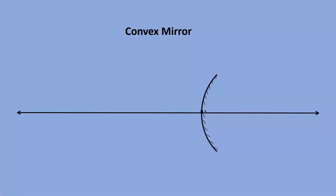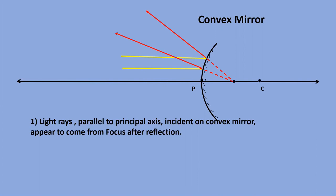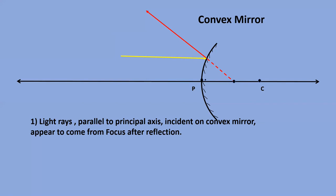Now let us move on to the convex mirror. For a convex mirror, the center of curvature and the focus are on the right side of the mirror. Let us see the rules to draw ray diagrams in the case of a convex mirror. Rule 1: When a light ray is parallel to the principal axis and incident on the convex mirror, it gets reflected in such a way that it appears to come from the focus.